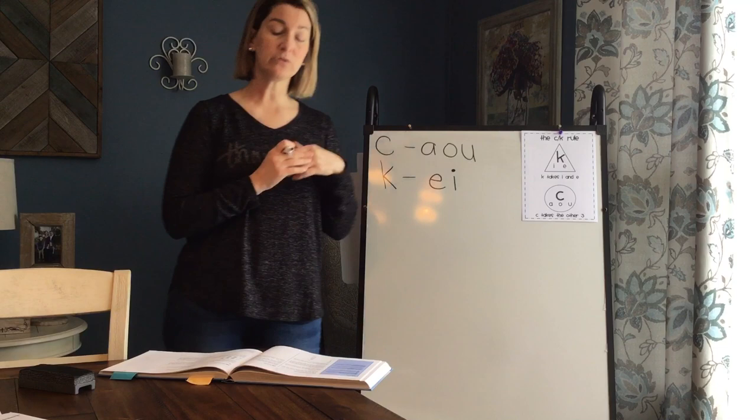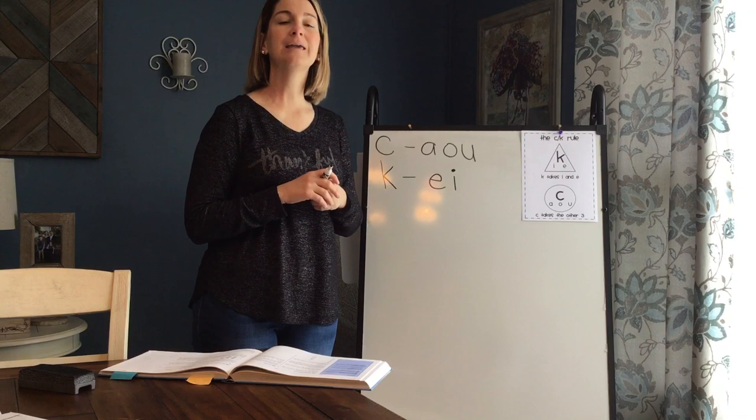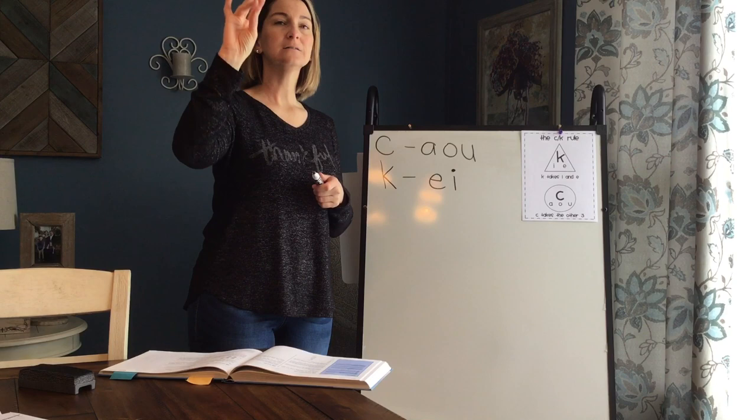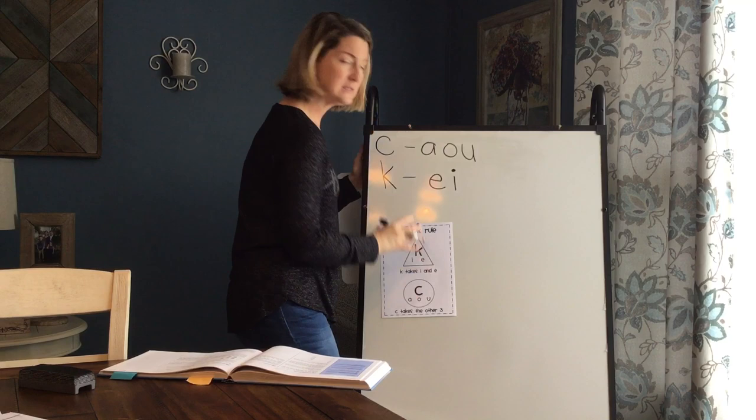So let's practice a little bit with a couple words because I think it makes more sense when we practice it with real words. So the first word is cat. Cat. Can you tap it out with me? C-A-T. Cat. Again. C-A-T. Cat. Good. So now to spell cat. Let's think about it.